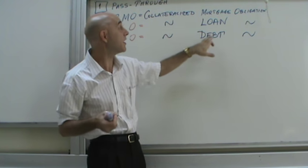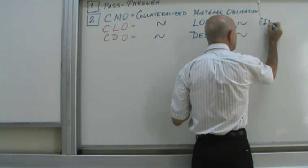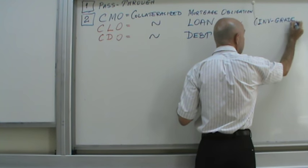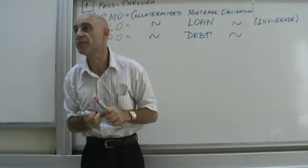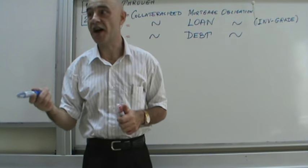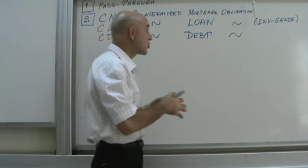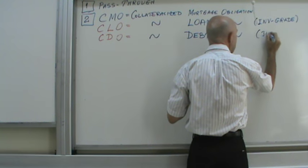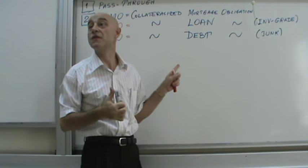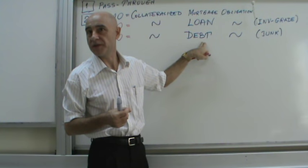Loan and debt might seem like the same thing, but in this context the CLO loan is investment grade — meaning low risk, high quality debt. The CDO, when it says debt, actually means junk, standing for high risk, low quality debt.